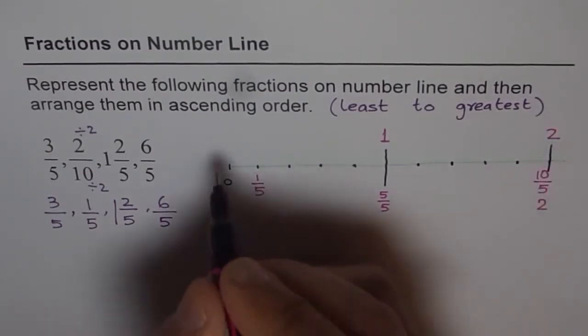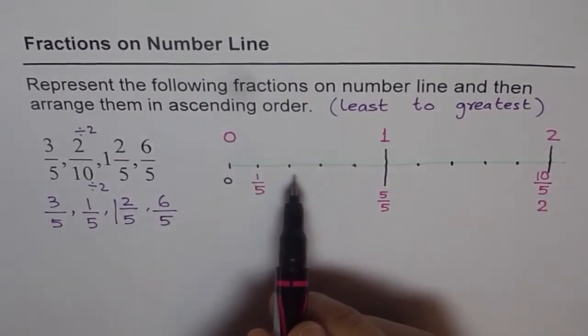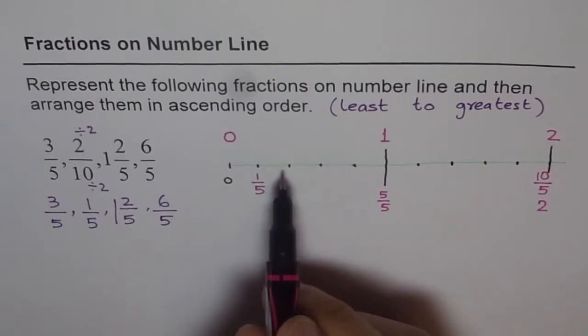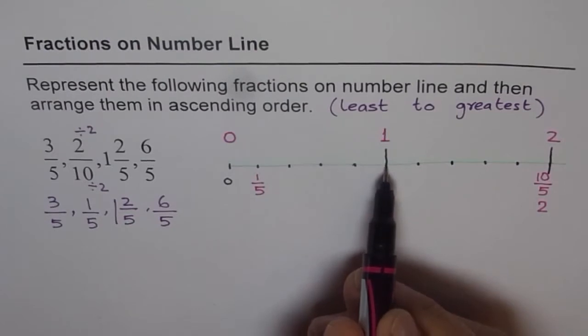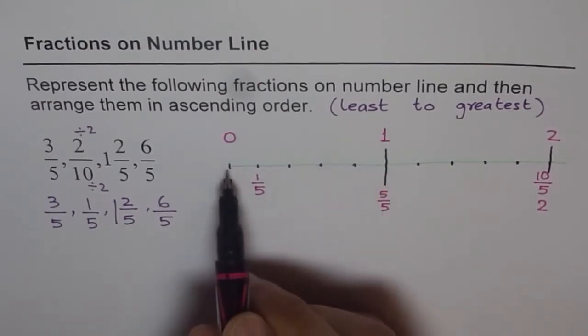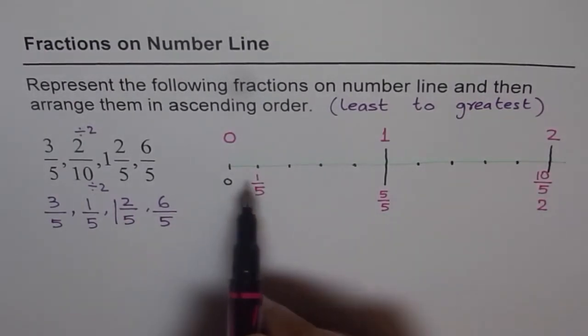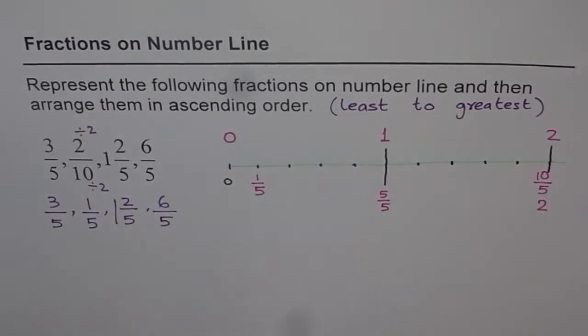So if you see on this number line, we started with 0 and we divided it into 1 fifths. This is the first 1 fifth. That is the second, third, fourth, fifth 1 fifth. That means 1 whole. I hope you appreciate how we have divided this line and got all the divisions in fifths. So these are all fifths.